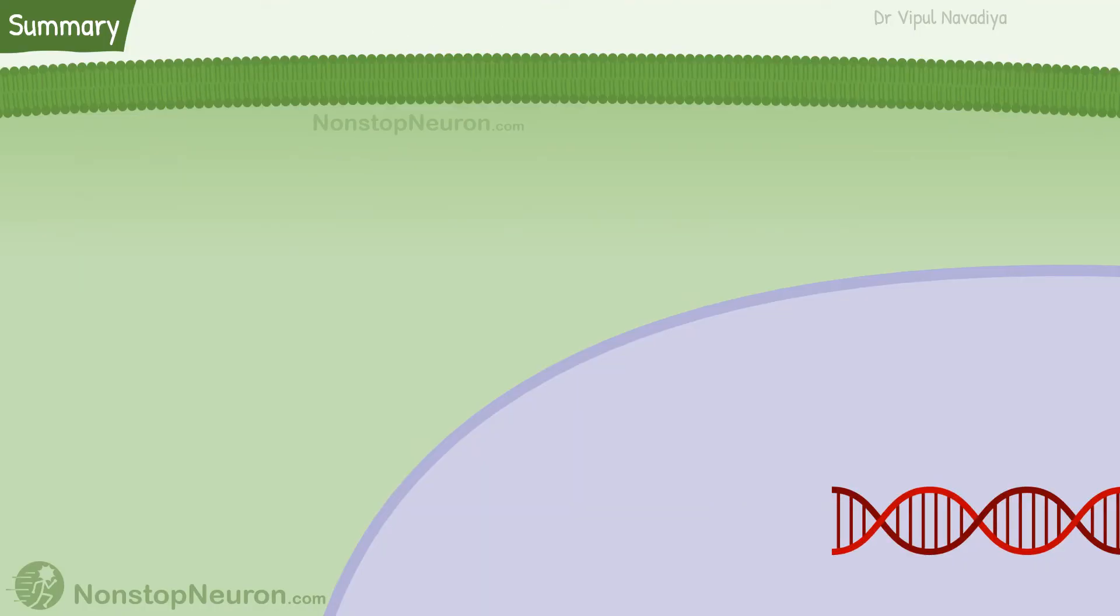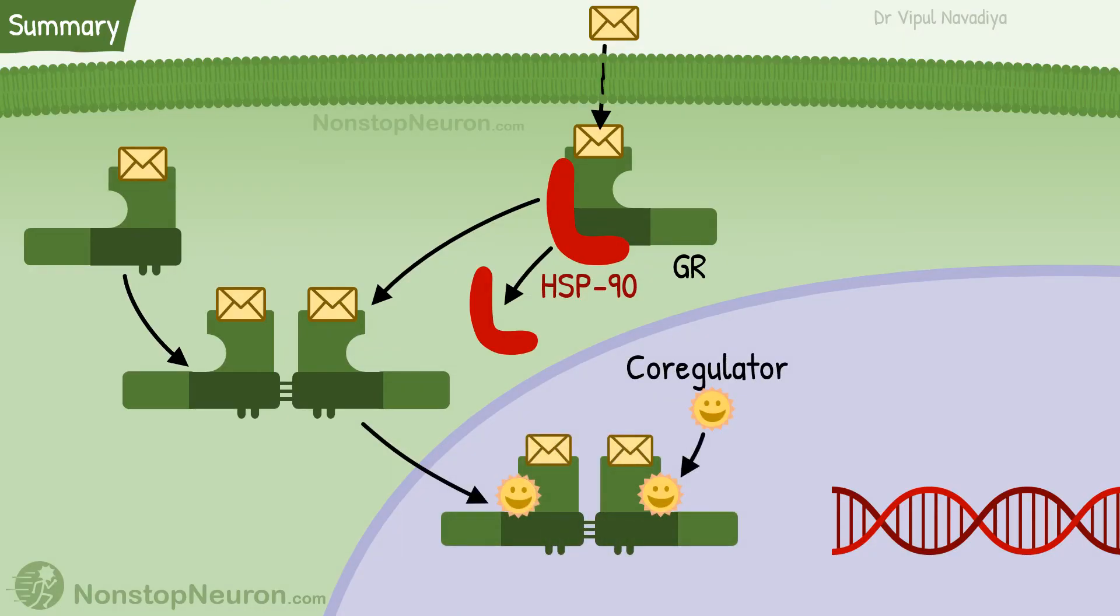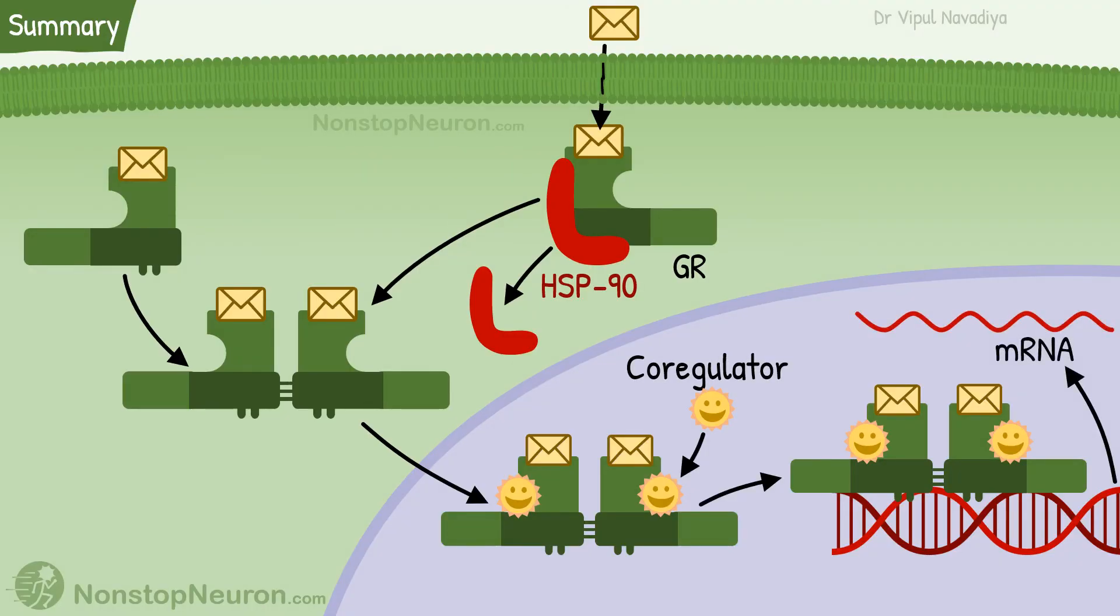Under resting state, glucocorticoid receptors are located in the cytoplasm and are bound to chaperone protein HSP-90. It prevents its activity. Binding of glucocorticoid causes release of chaperone protein, dimerization, entry into the nucleus, binding with co-regulator, binding with DNA, and modulation of transcriptional activity.